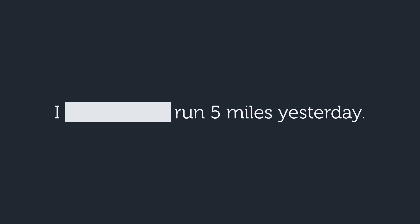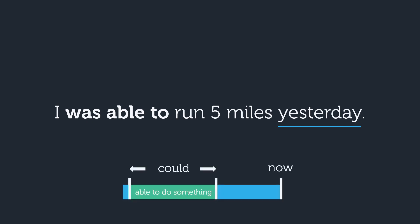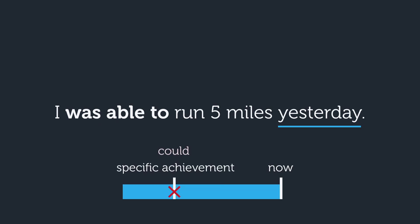Now, how would you fill in the blank to say that you achieved your goal of running 5 miles yesterday? The answer is: I was able to run 5 miles yesterday. Why didn't I use 'could' here? Because 'could' usually refers to an ability in general that you had for a lot of time. We don't usually use 'could' to talk about a specific achievement in the past that happened at a specific time.